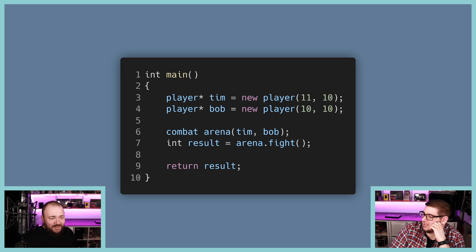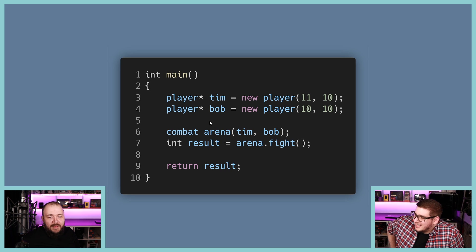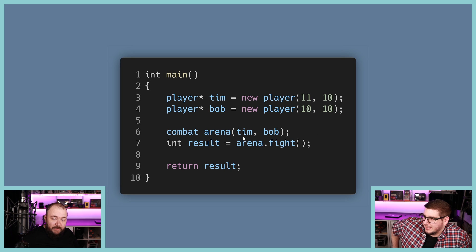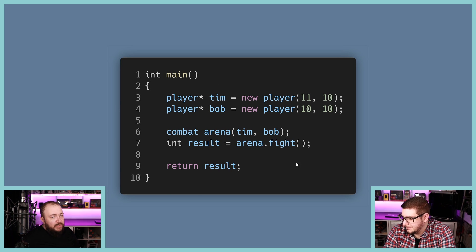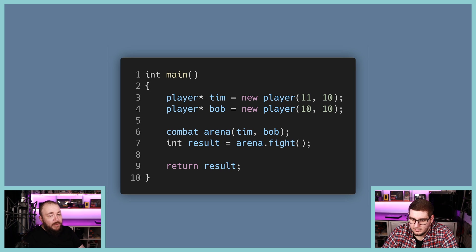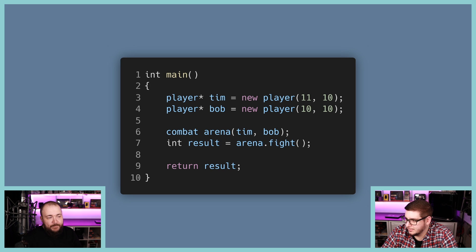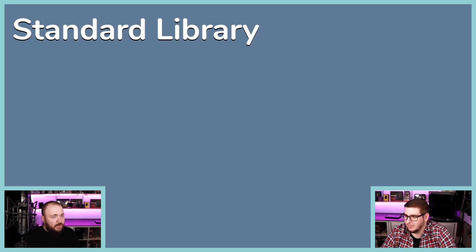The example runs and works. You create player Tim, give him values, create player Bob, send them both into the arena, call arena.fight(), and get a result. This shows the importance of creating a nice interface with clean classes. You can create as many players as you want and send them to the arena — that's pretty clean.